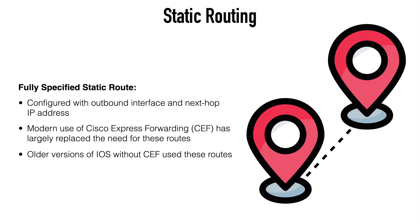The final classification to look at for static routes are fully specified static routes, which combines both of the techniques we've already looked at. A fully specified static route is configured with both an outbound interface and a next hop IP address. With modern devices using CEF — Cisco Express Forwarding — fully specified static routes really aren't necessary any longer, and we would fall back to the recommendation of using recursive static routes with a next hop address. Fully specified static routes were most commonly used in older IOS versions prior to CEF. The configuration is essentially the same, except we indicate both the outgoing interface and the next hop IP address at the end of the IP route command.